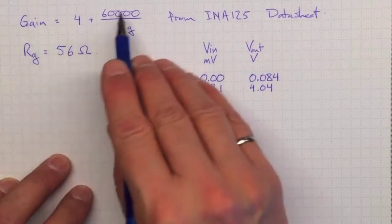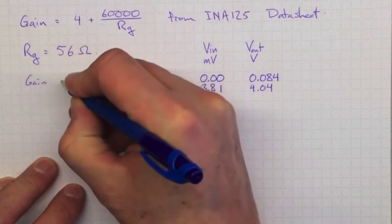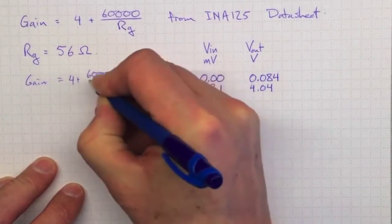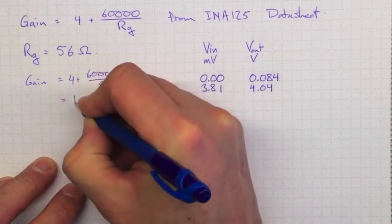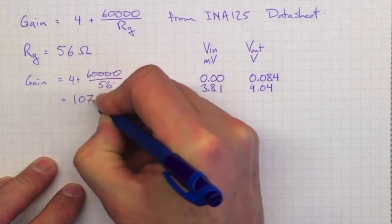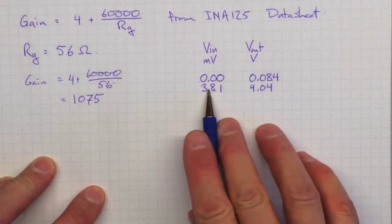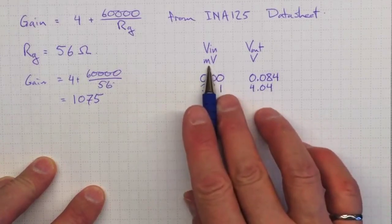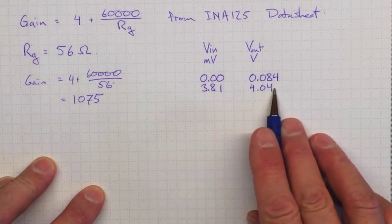Now, if we plug that in, then we should wind up with a gain of 4 plus 60,000 divided by 56, and if you punch the numbers, that's 1,075. So that certainly accounts for what we're seeing, that we're seeing a little more than 1,000 times increase in voltage from 3.81 millivolts up to 4.04 volts.